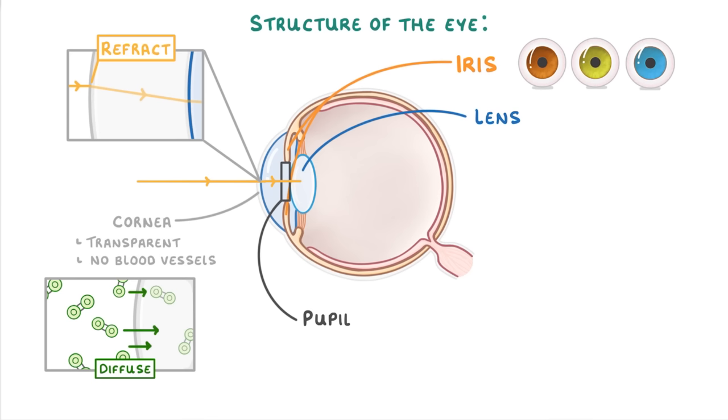Just like the cornea, the job of the lens is to refract or bend light. But importantly, the lens can change its shape, which allows it to control how strongly it refracts the light. And this helps it to always focus the light perfectly onto the retina at the back of the eye.